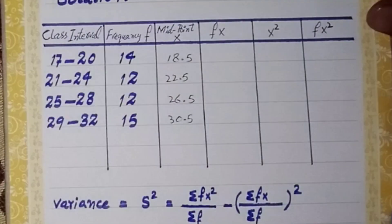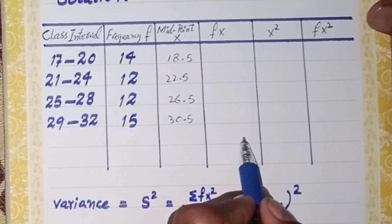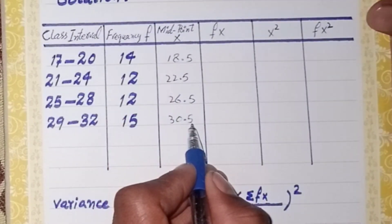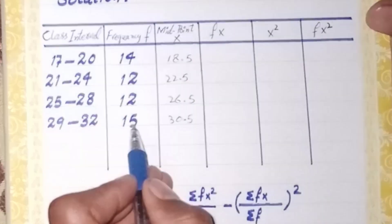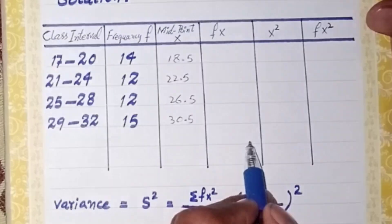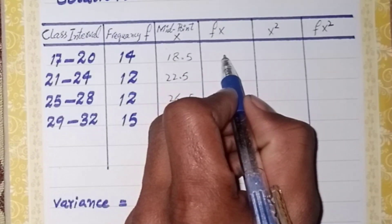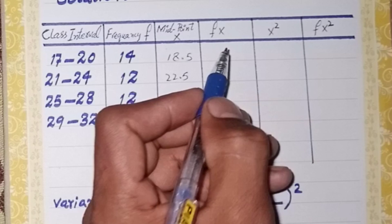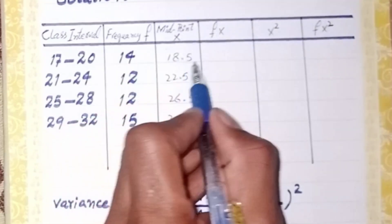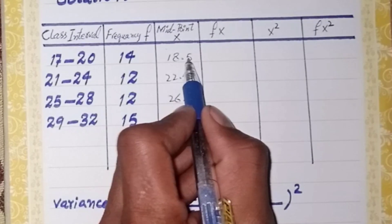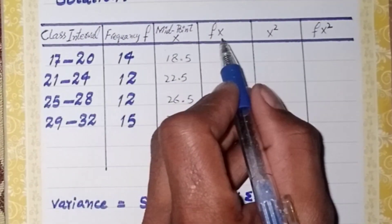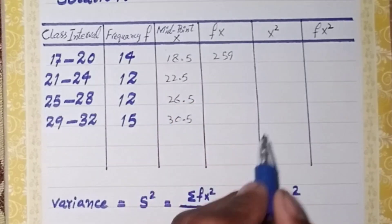After that, we will calculate the fx column. The x column has been generated and the f column is already given to us — we multiply both values to calculate fx. For the first row, the f value is 14 and the x value is 18.5; we multiply both and the fx value is 259.